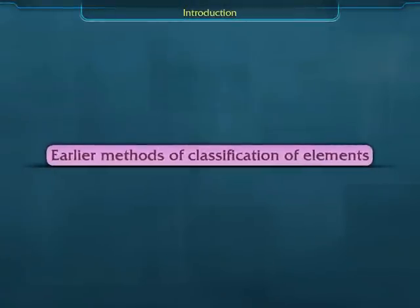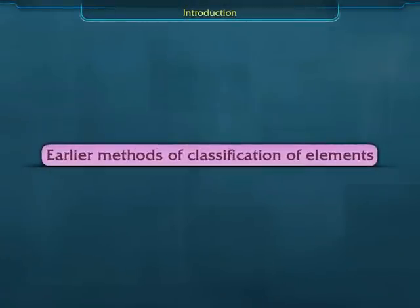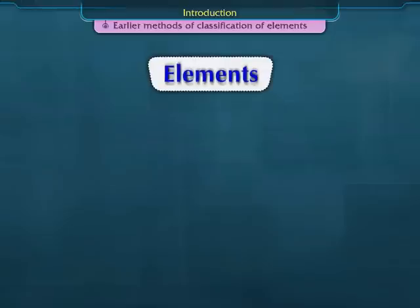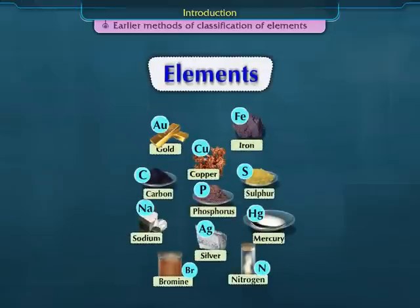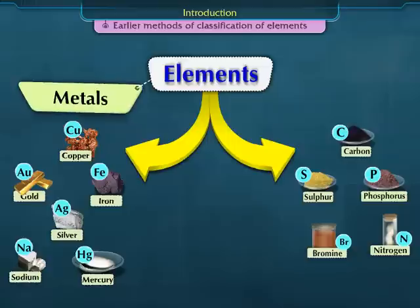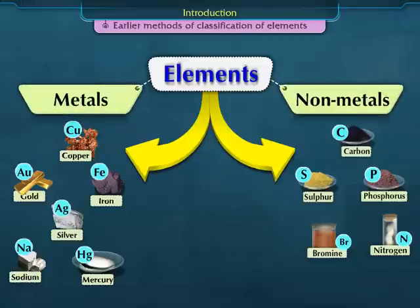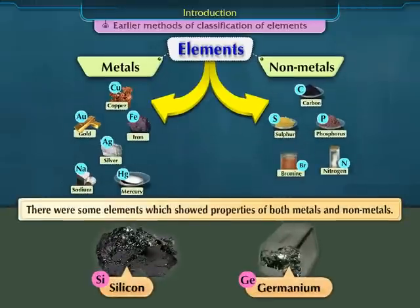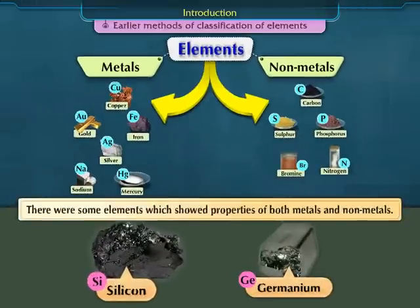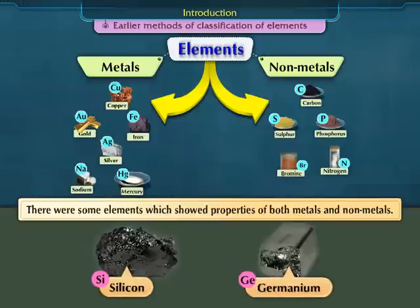Earlier methods of classification of elements. Earlier, on the basis of their properties, elements were classified as metals and non-metals. But this method of classification was not very successful, as there were some elements which showed properties of both metals and non-metals. They could not be placed in any of the two groups.